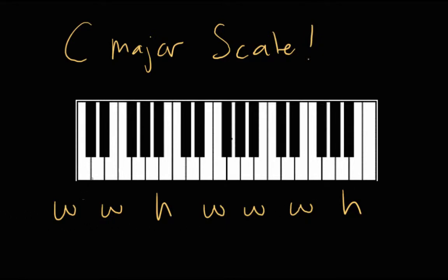What we're going to do is look at how we construct the C major scale using this formula. Obviously the first note we're going to start on is C. There are seven notes in the C major scale — the first through seventh note — and then it goes back to C, back to the octave. That's why it's called the octave: it's the eighth note. So here we have C, and we're going to go a whole step up from C to get to the second note. We go from C to C sharp — that's a half step — then another half step up, which brings us to D.